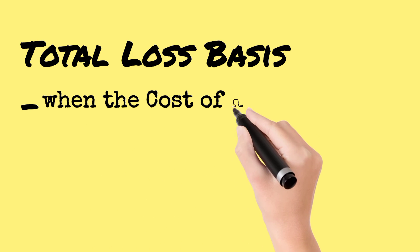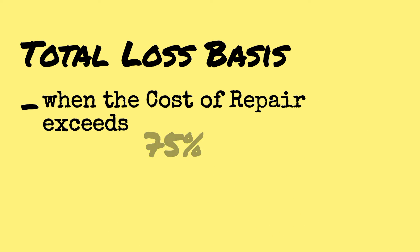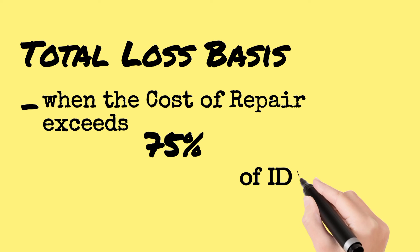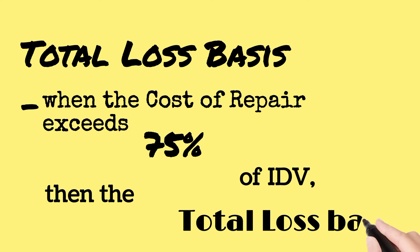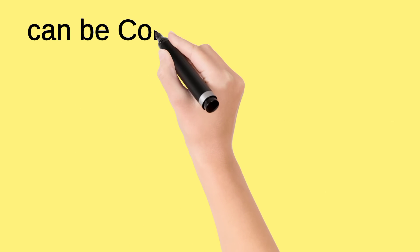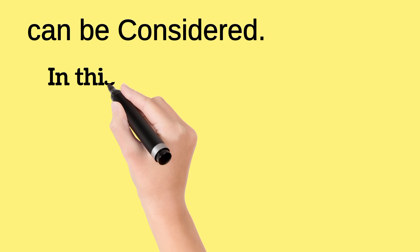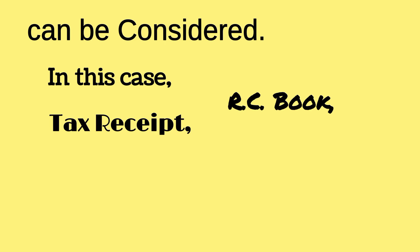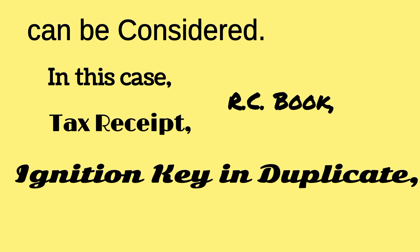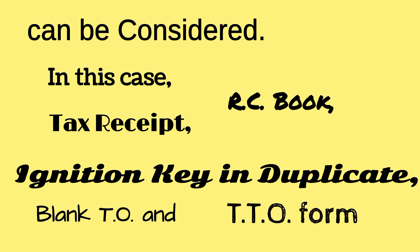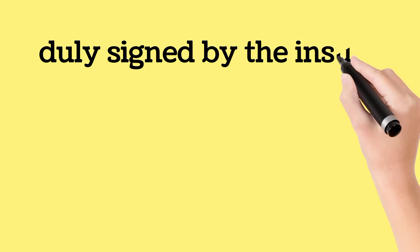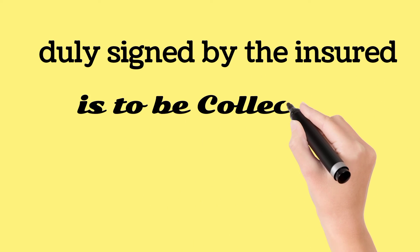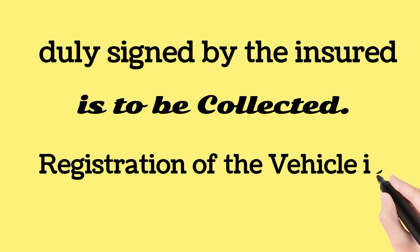Total loss basis: When the cost of repair exceeds 75% of the IDV (Insured Declared Value), then total loss basis can be considered. In this case, the RC book, tax receipt, ignition key in duplicate, and blank TO and TTO forms duly signed by the insured are to be collected, and registration of the vehicle is to be cancelled.